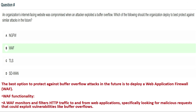An organization's internet-facing website was compromised when an attacker exploited a buffer overflow. Which of the following should the organization deploy to best protect against similar attacks in the future? Option A: NGFW, Option B: WAF, Option C: TLS, Option D: SD-WAN. The correct answer for this question is Option B: WAF.